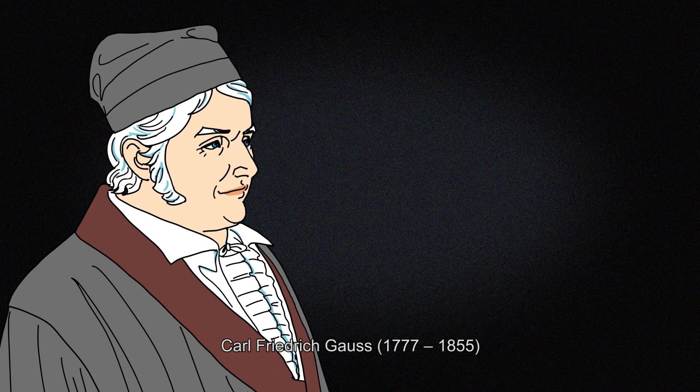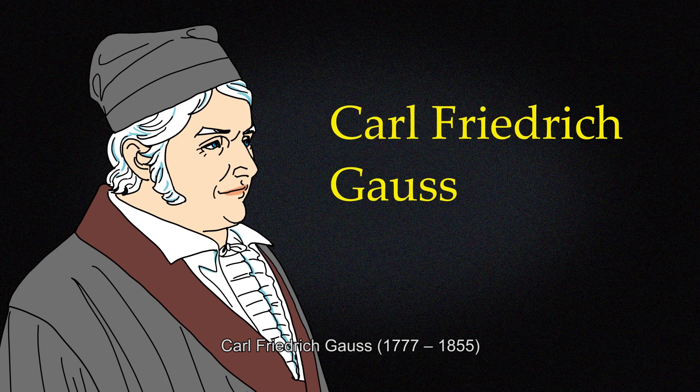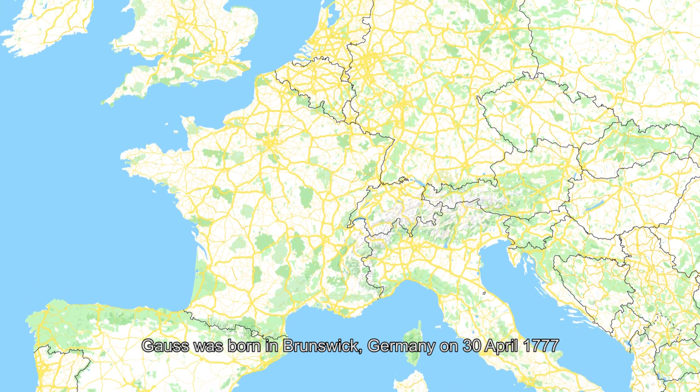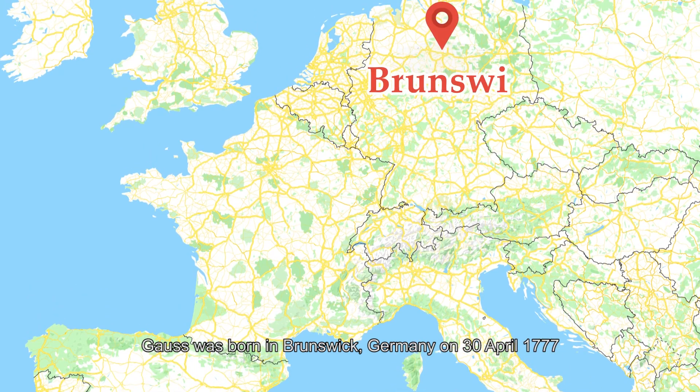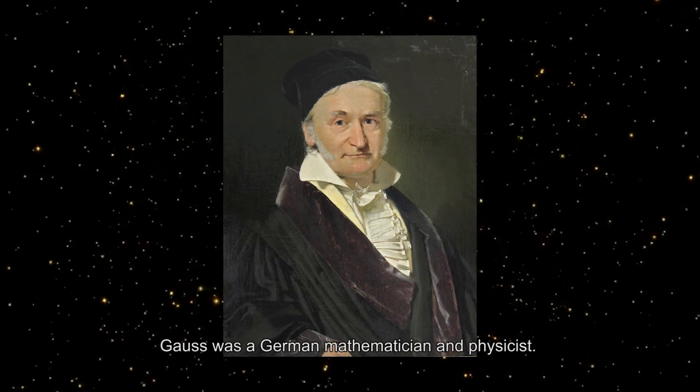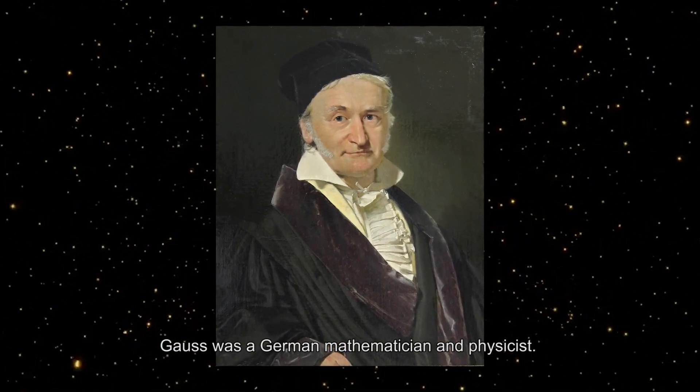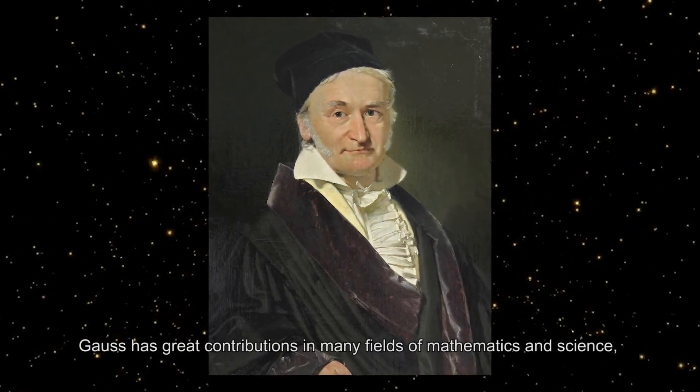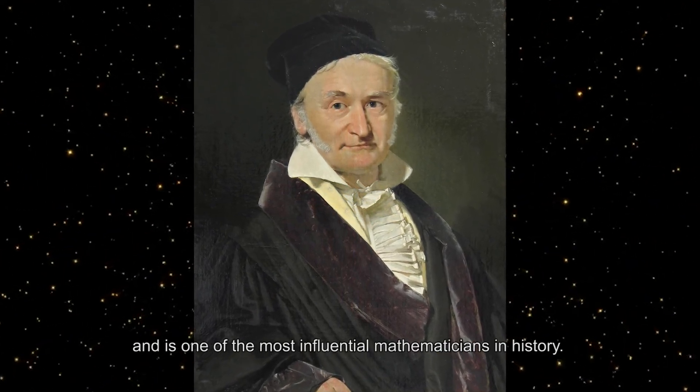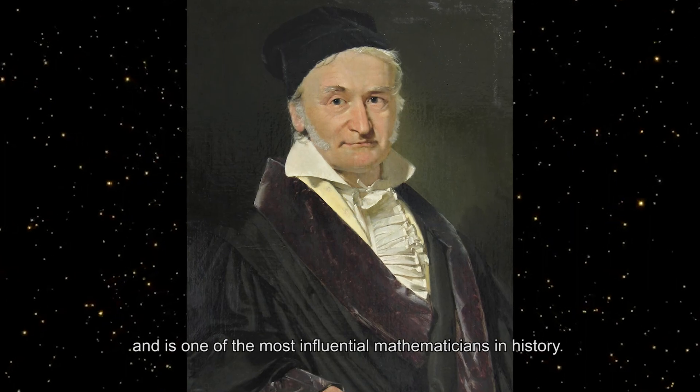Carl Friedrich Gauss, 1777 to 1855. Gauss was born in Brunswick, Germany on the 30th of April 1777. Gauss was a German mathematician and physicist. Gauss has great contributions in many fields of mathematics and science, and is one of the most influential mathematicians in history.